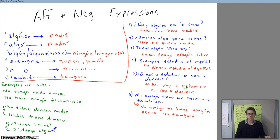Okay, now let's take a look at some examples of these in use. I'll go through number one there. ¿Hay alguien en la clase? To use the negative expression in the answer, no. No hay nadie. Is there someone in the class? No, there is no one.